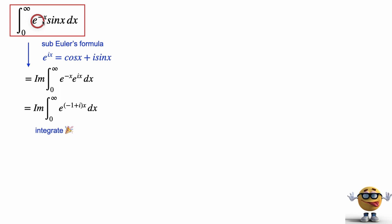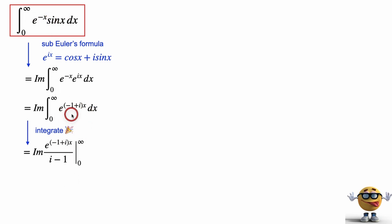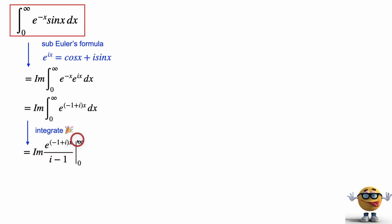It's kind of cool — this original form is not easy to evaluate, but this one is, so we have a little celebration here. The result is e to the negative one plus ix divided by negative one plus ix, taking the imaginary part, evaluated from zero to infinity.